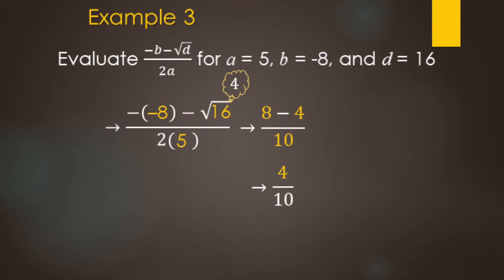For this one, we can reduce the fraction. Both 4 and 10 are even, so we can divide them both by 2 — 4 divided by 2 over 10 divided by 2 — giving us 2 over 5.